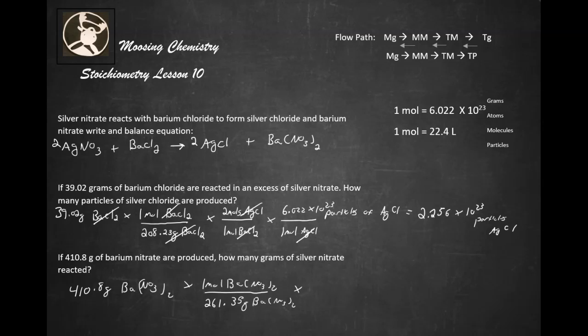And we want to go from, of course, my grams to my moles to their moles to their grams. So we're going to do the molar relationship between silver nitrate and barium nitrate. So barium nitrate goes on the bottom here, two moles of silver nitrate on top.